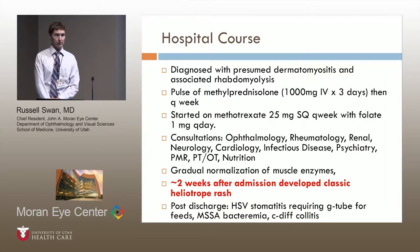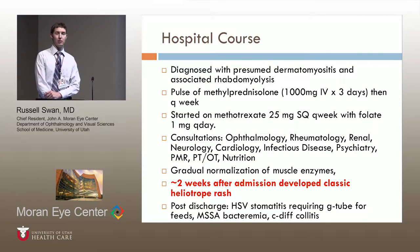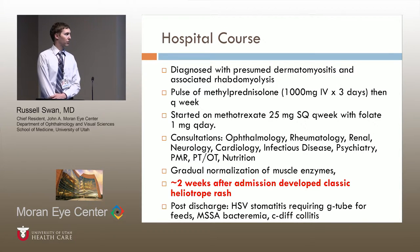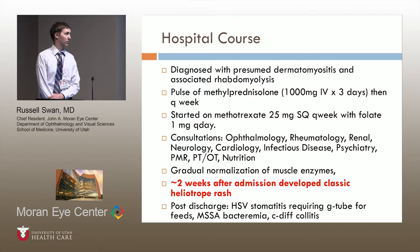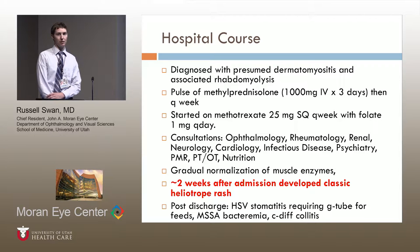She had gradual normalization of her muscle enzymes over about a two- to four-week period, admitted either inpatient or in the physical medicine rehabilitation service. Approximately two weeks after admission, she developed the classic heliotrope rash associated with juvenile dermatomyositis — notably one of the few cases in the literature where ophthalmic findings preceded the classic heliotrope rash. Post-discharge, she developed HSV stomatitis, required a G-tube for feeding, had MSA and SSA bacteremia, and also developed C. diff — a very significant impact on her life.